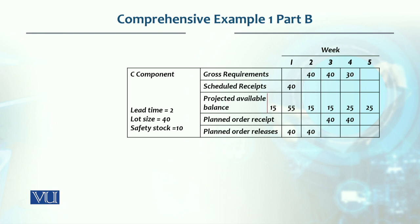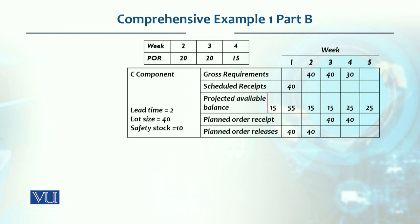Now for component C. Each X requires two C units. Based on the planned order releases of X, we derive C's gross requirements: in the second week, 20 units of X production requires 40 C units; in the third week, 20 X units require 40 C; and in the fourth week, 15 X units require 30 C units.